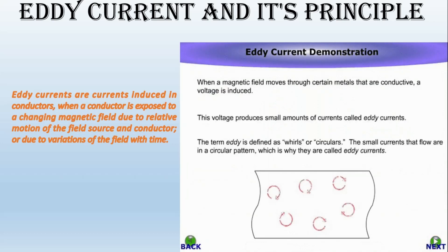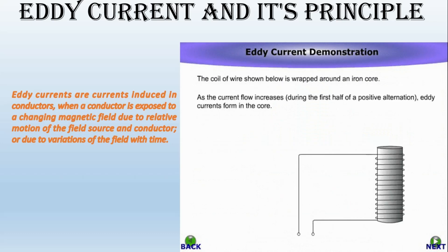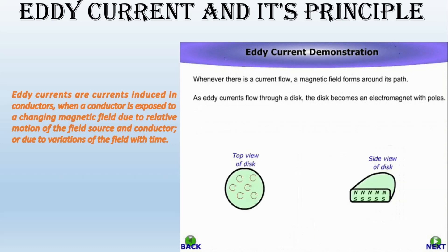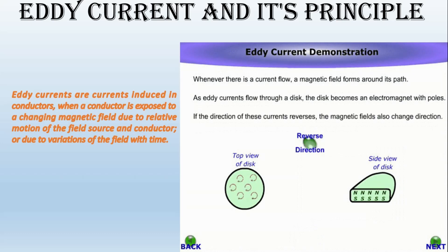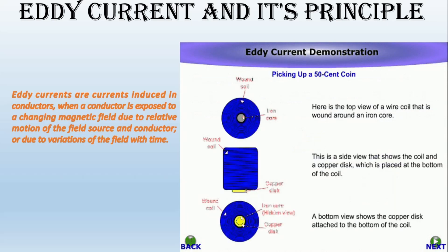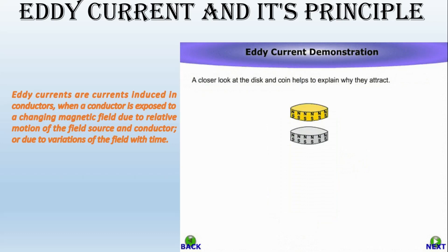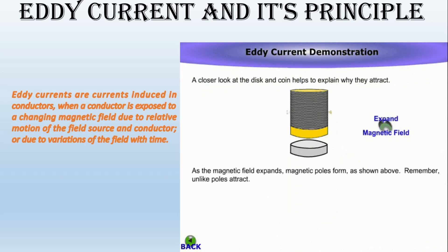Eddy currents, like all electric currents, generate heat as well as electromagnetic forces. The heat can be harnessed for induction heating. The electromagnetic forces can be used for levitation, creating movement, or to give a strong braking effect. Eddy currents can also have undesirable effects — for instance, power loss in transformers. In this application they are minimized by lamination of conductors or other details of conductor shape.